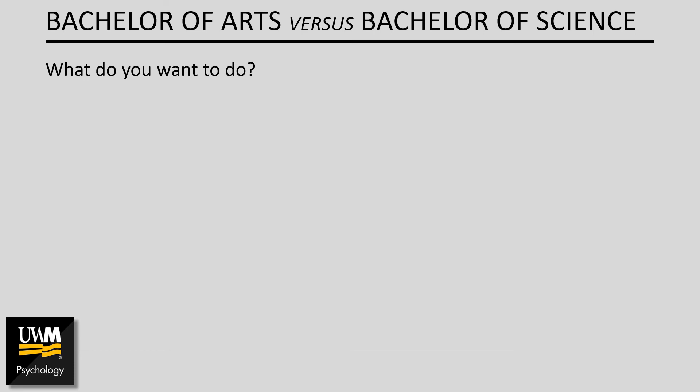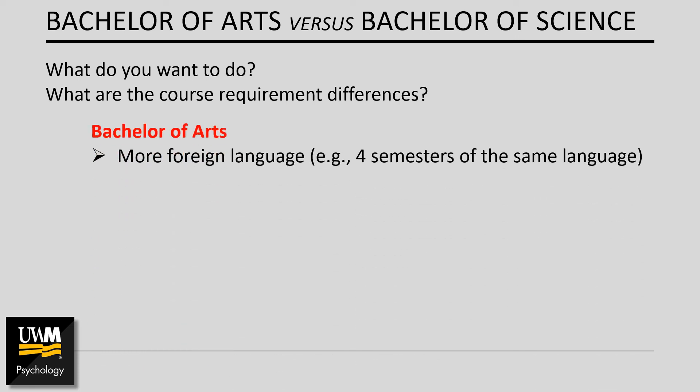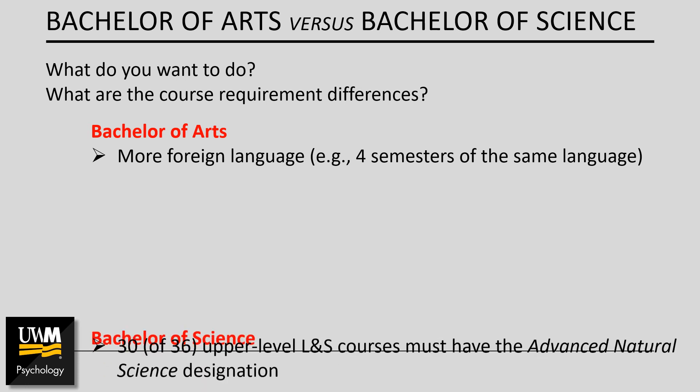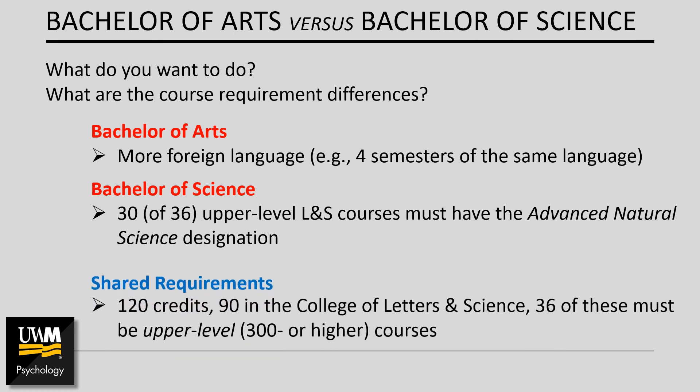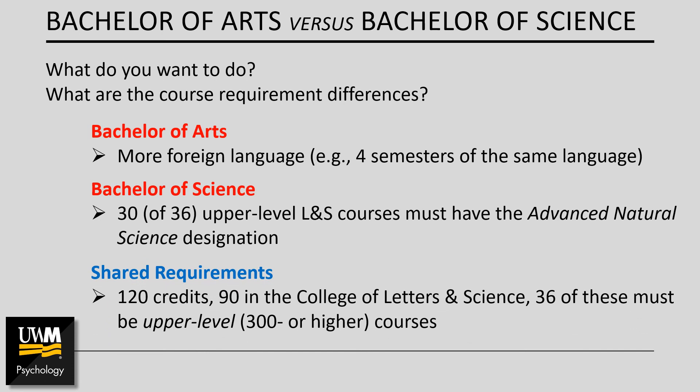A question you might have is whether there are differences in course requirements across degree types. In broad strokes, the primary difference between degrees is that more foreign language is required of students who earn the BA, whereas students who pursue the BS must complete 30 advanced credit hours in letters and science courses with the advanced natural science designation. Whether you choose the BS or the BA, you will need to complete 120 credit hours. 90 of these will be in the College of Letters and Science and 36 of 90 must be advanced courses, which are classes at the 300 level or higher.